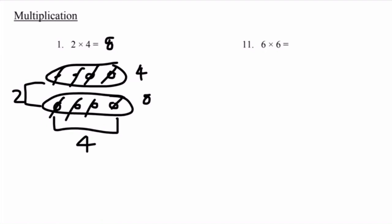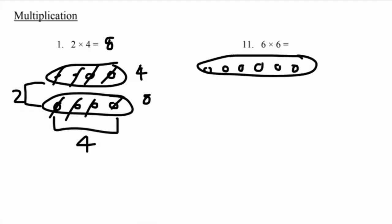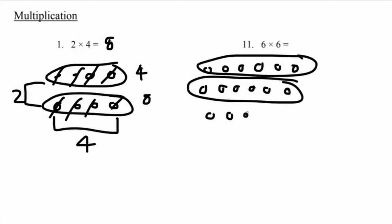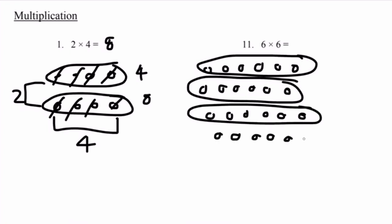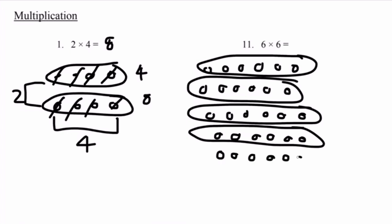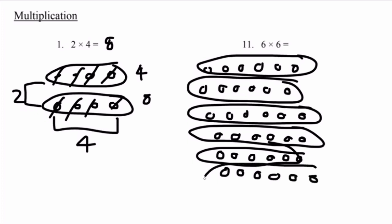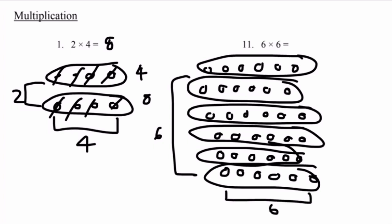Number 11: 6 times 6. 6 times 6 can also be referred to as 6 groups of 6. Let's draw it out — six groups of 6 circles each, drawn one group at a time: first group, second group, third group, fourth group, fifth group, sixth group. We now have a total of 6 groups with 6 circles each.